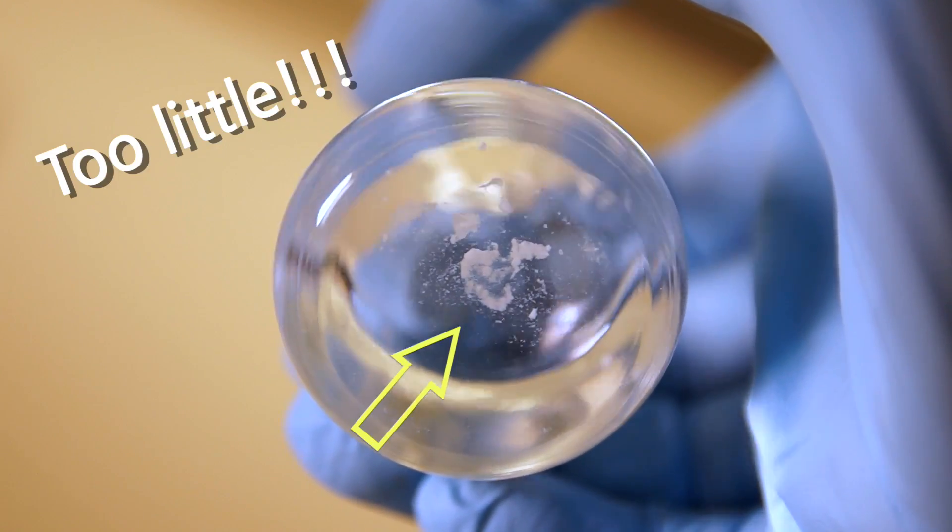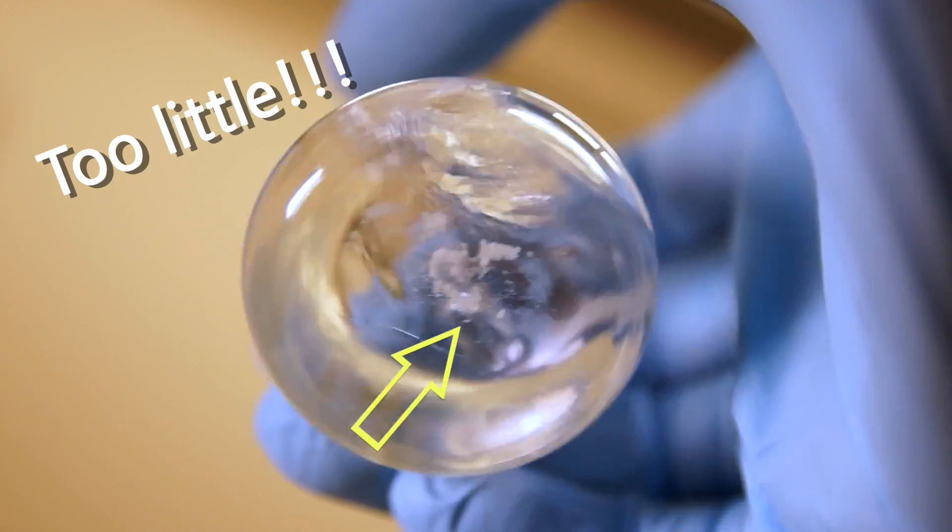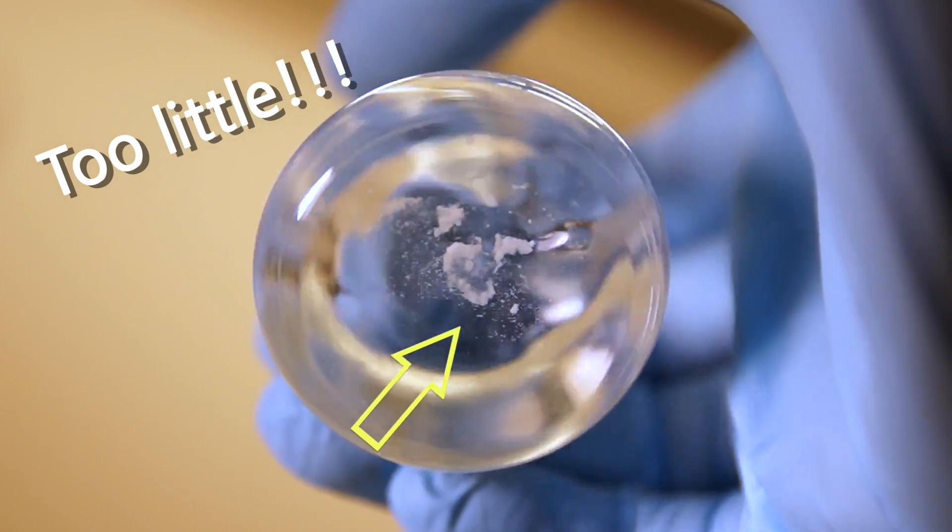If you don't add enough magnesium sulfate, it'll stay clumped on the bottom and won't move. This means you haven't absorbed all of the water.